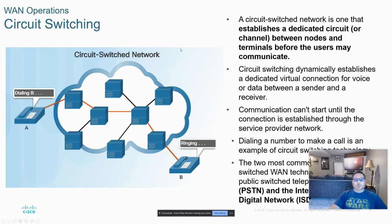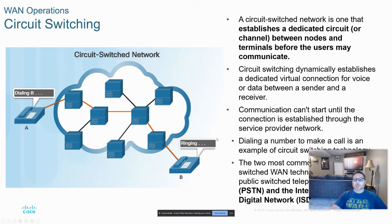Circuit switching versus packet switching: in circuit-switched networks, as shown in the diagram using traditional phones, when a connection is made through the provider network, it always takes the same path between the two endpoints. The good is that it reduces latency because it's always a set path — there's no decision-making by routing devices. The downside is fault tolerance: if there's an outage on any link in that path, that connection goes down. Typical services using circuit switching are ISDN and the public switched telephone network.